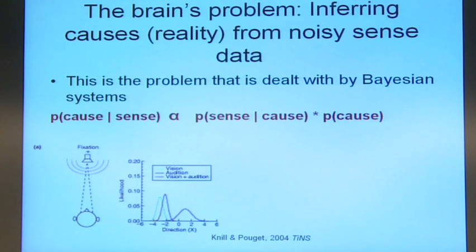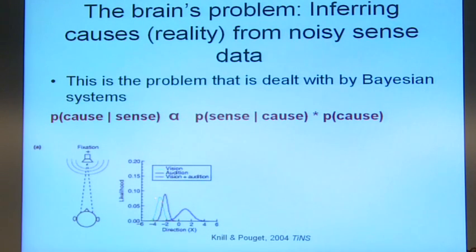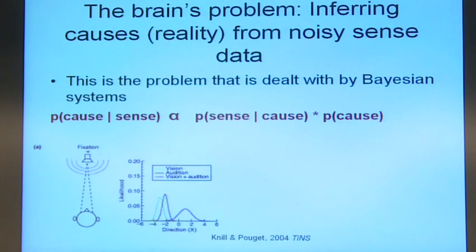Bayesian inference allows you to take more heed of the visual information because it has a smaller noise — a smaller standard deviation. So you're more likely to take more account of your visual information than your auditory information, which is a very sensible thing to do.